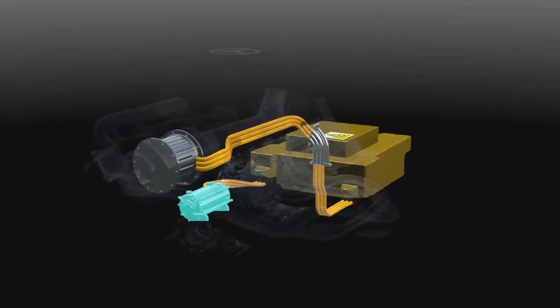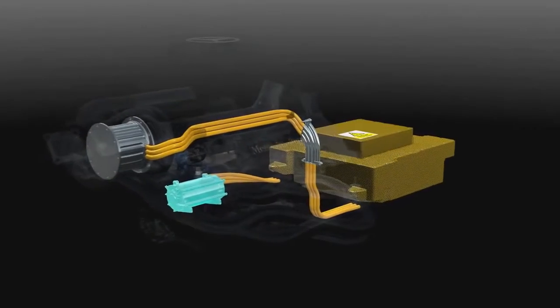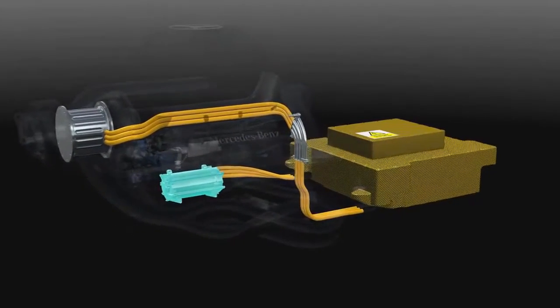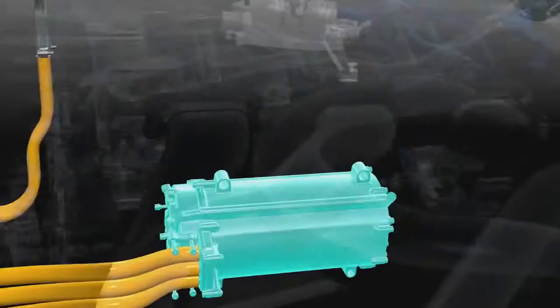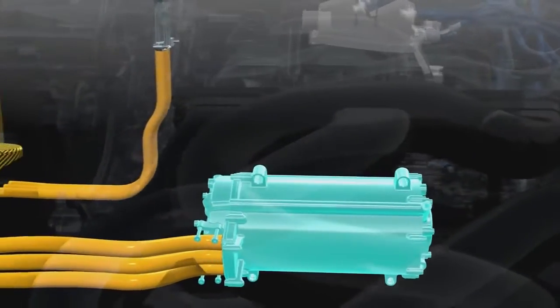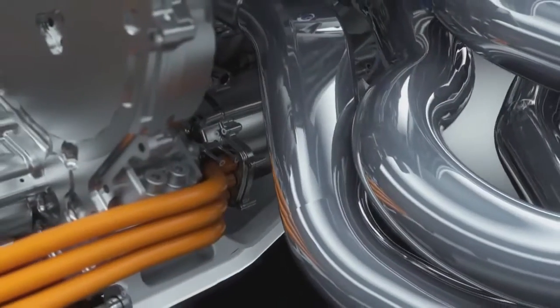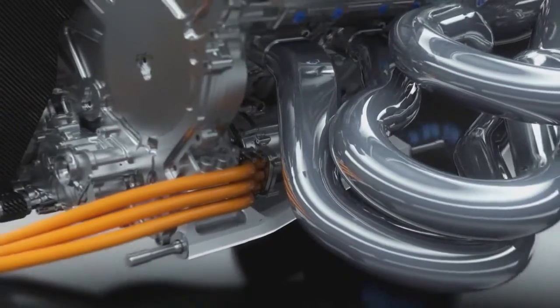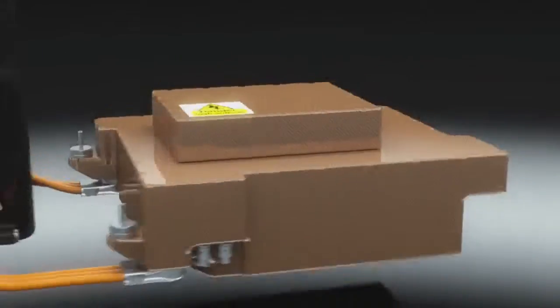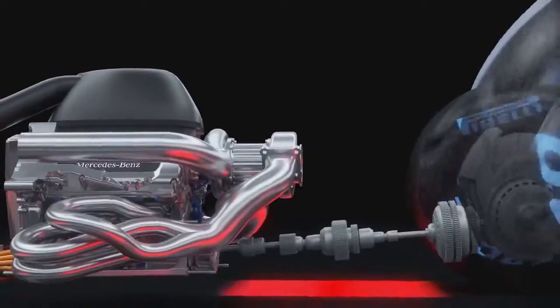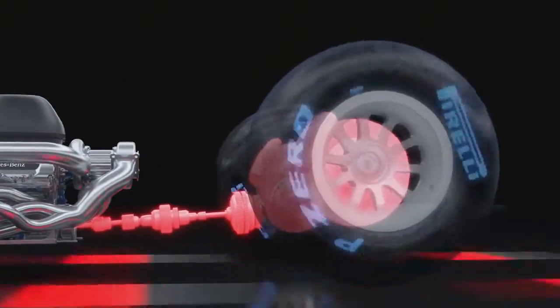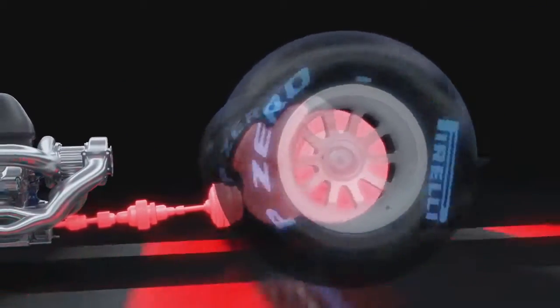The MGU-K delivers up to 160 horsepower for 33 seconds per lap, equivalent to a Mercedes C220 CDI. Connected to the braking system and acting as a generator, the MGU-K can feed so much energy into the battery every lap that you could talk for 370 hours on your BlackBerry smartphone.